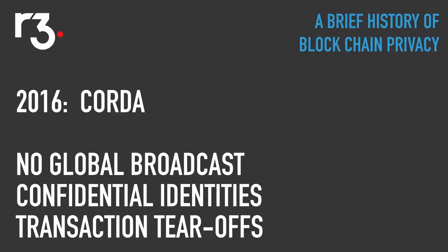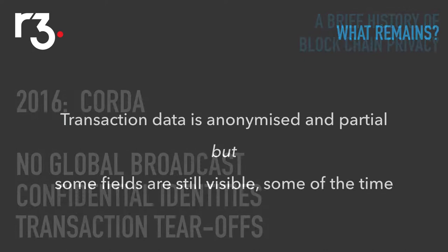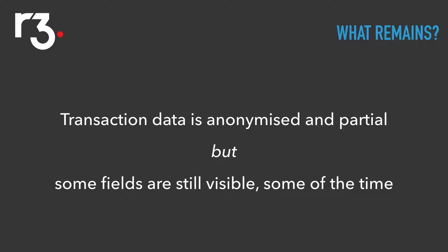We also have transaction tear-offs, which allow you to partially reveal the contents of a transaction for signing and other purposes. These techniques are based on years of experience with Bitcoin — I am the lead platform engineer of Corda, and I was the lead developer of BitcoinJ, a very widely used Bitcoin library for building applications. But it's still not perfect: even though transaction data is anonymized and partial, nonetheless some fields in transactions are still visible some of the time to some parties. This is a privacy model clearly better than what came before, but still very difficult to reason about — you can't say for sure what can be seen, when, and by whom.